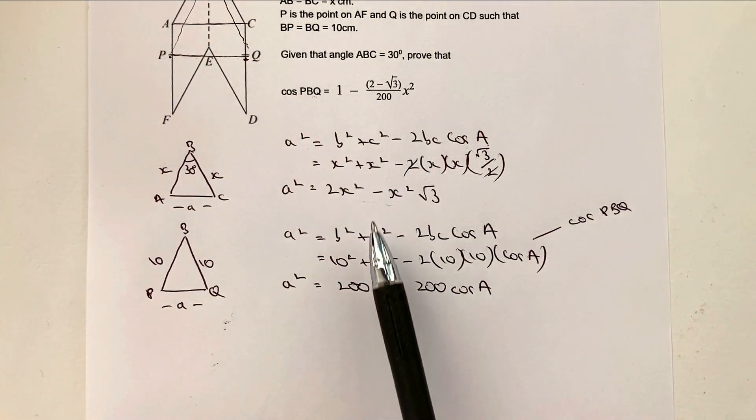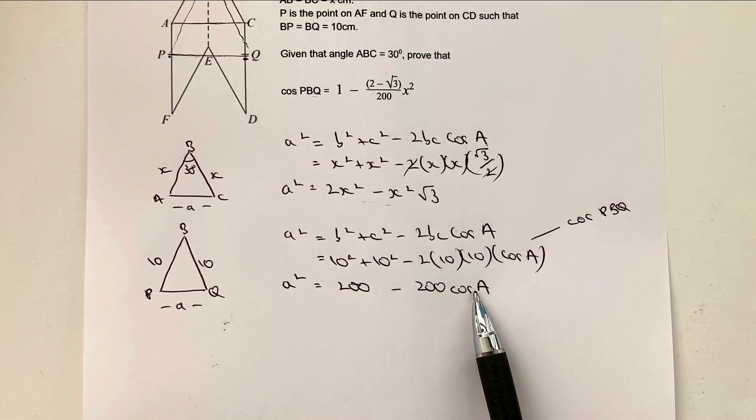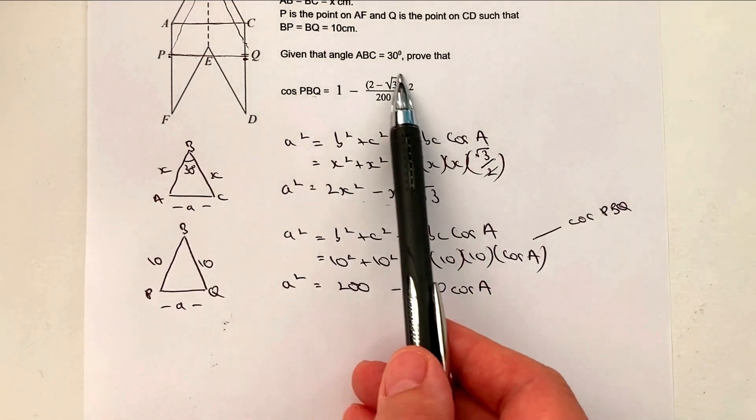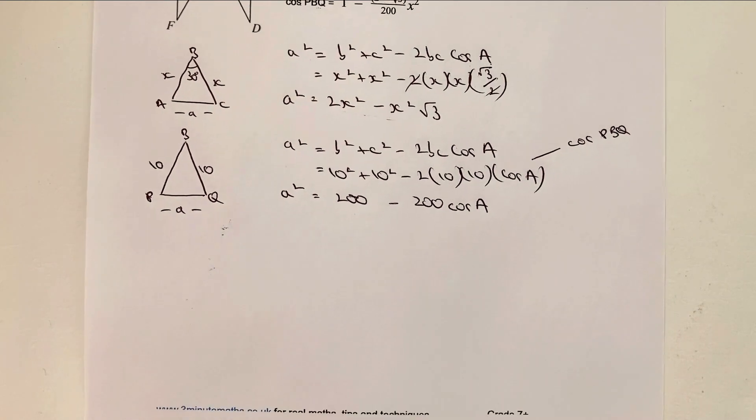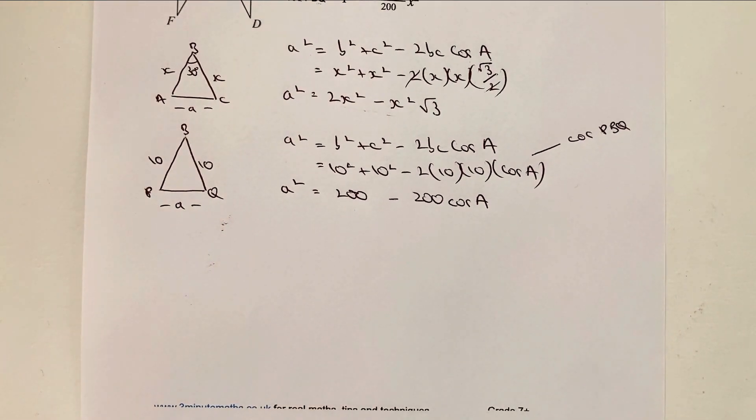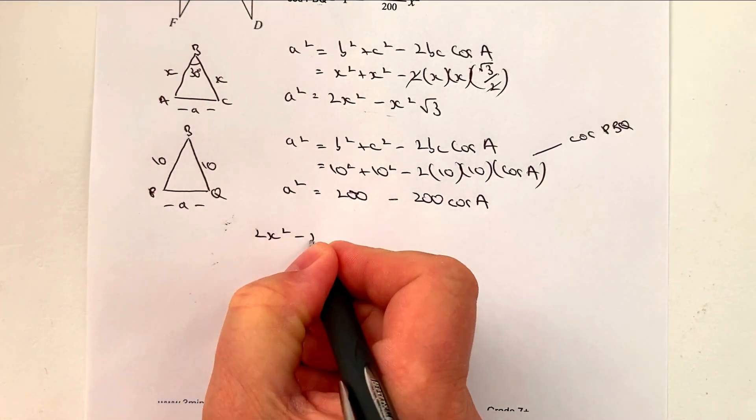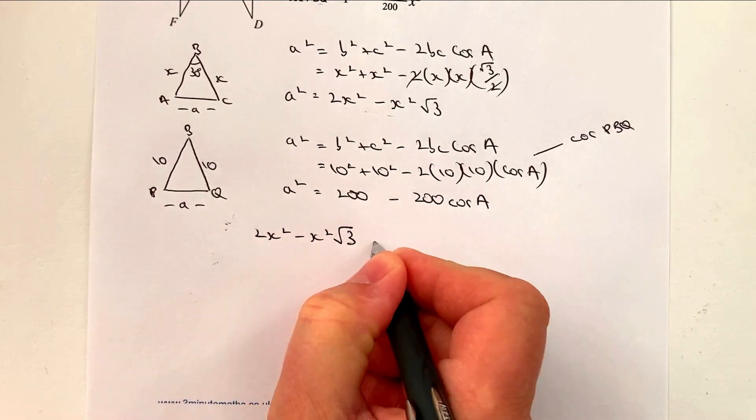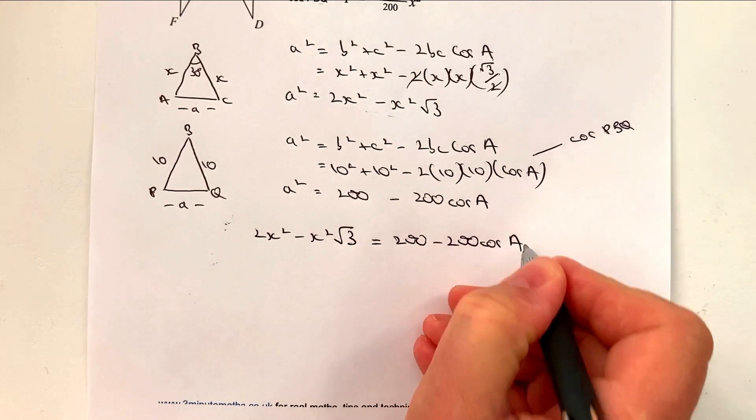Okay, so when we've made those two equal to each other, make this the subject. When we've got it as a subject, we should get something like that. Okay, so I'm going to work through that. Now, unfortunately, it's probably going to spill over onto the next page. I'll do my best. But unfortunately, it's going to be a little bit tricky with the limited amount of space I've got. So let's write it out. I've got 2x squared minus x squared root 3. And that's equal to 200 minus 200 cosine A.